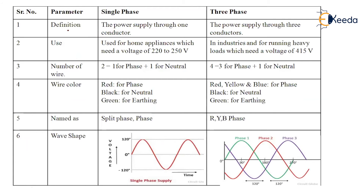Looking at the comparison chart: the first parameter is definition. Single phase is a power supply through one conductor, meaning one wire. Three phase supply uses power supplied through three conductors, that is three wires. In terms of use, single phase is generally used for home appliances which need low voltage in the range of 220 to 250 volts, while three phase is used in industry where heavy loads and heavy equipment are present.